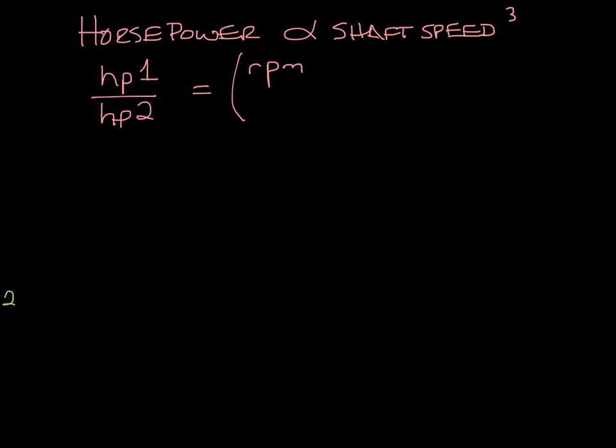So now let's move this over and look at the third law. The third law states that the horsepower varies by the cube of the RPM. So this equation looks like this. Horsepower 1 over horsepower 2 equals RPM1 over RPM2 cubed.